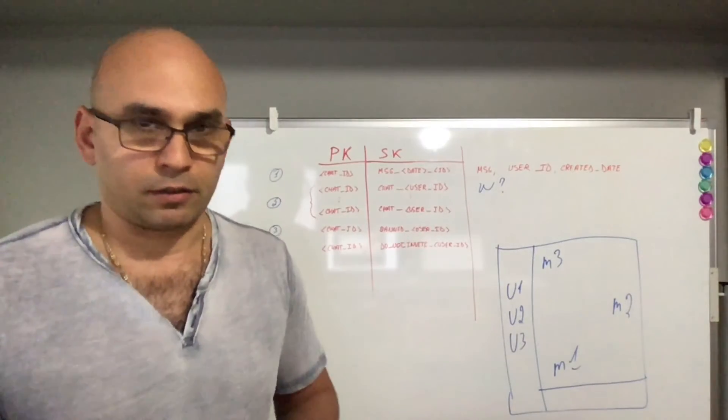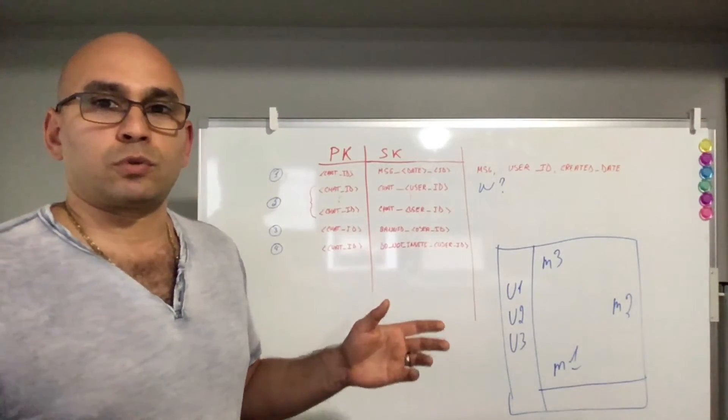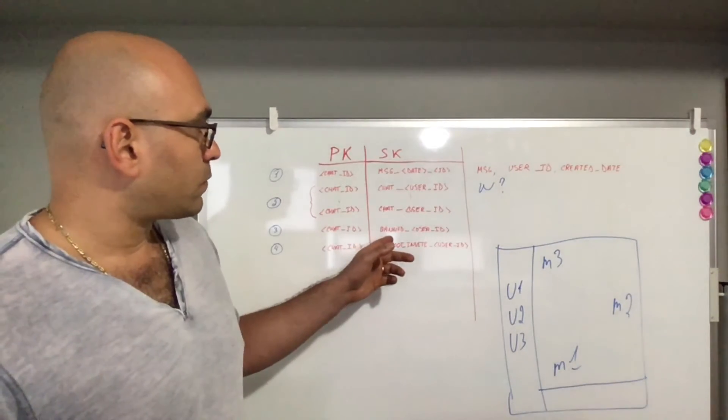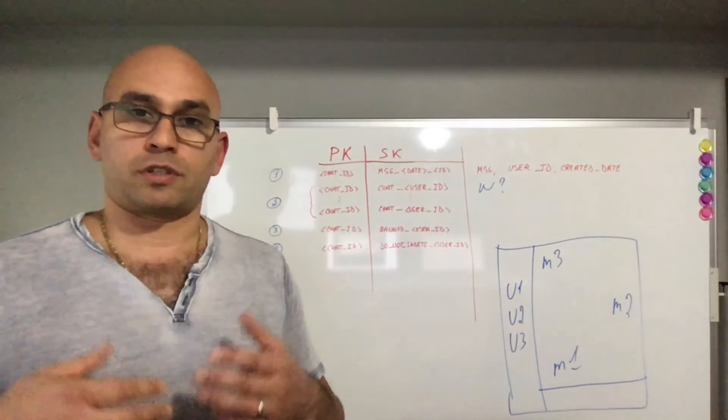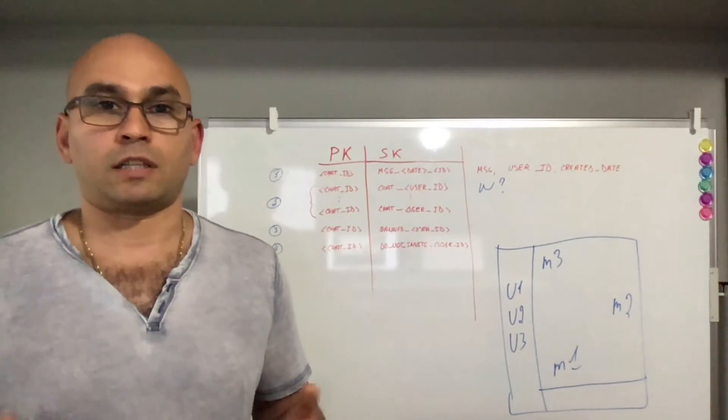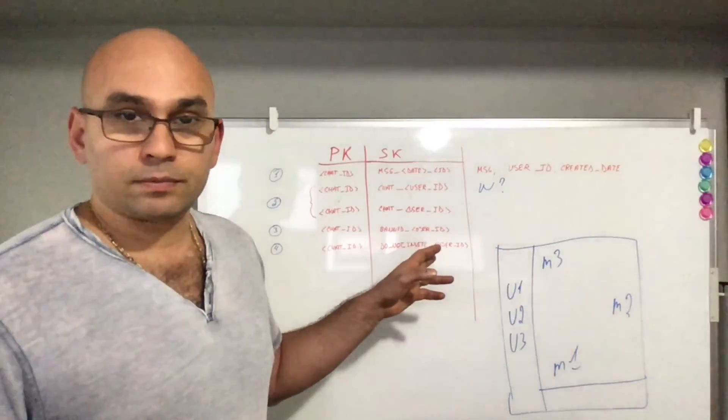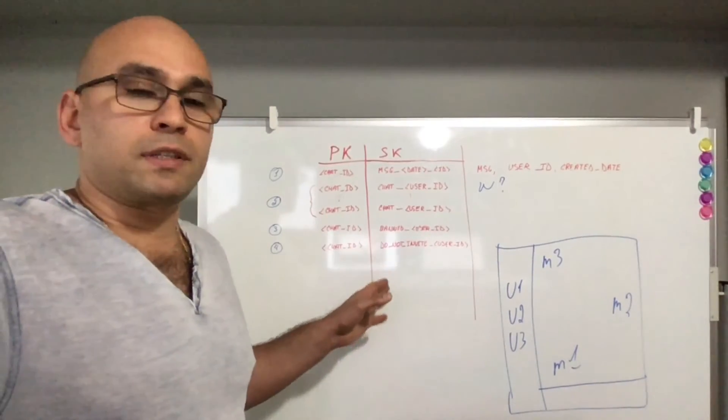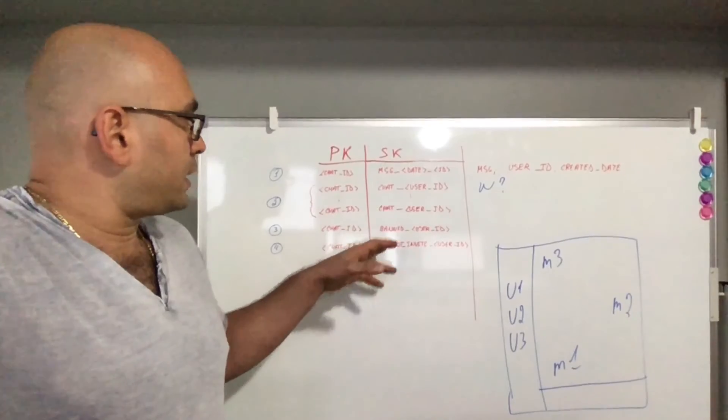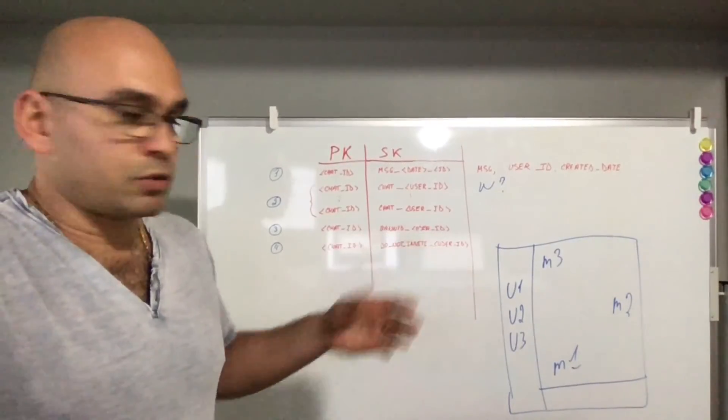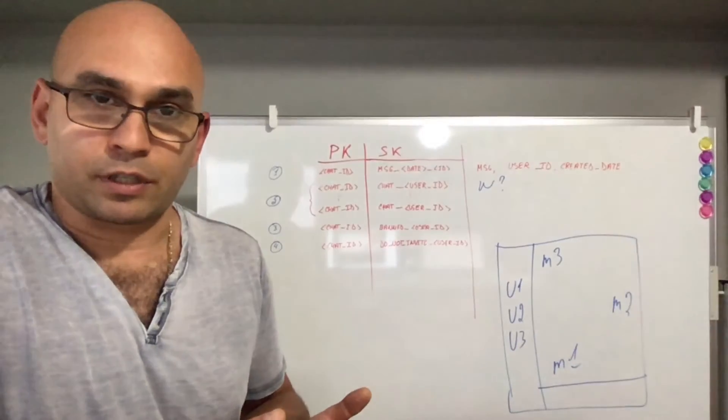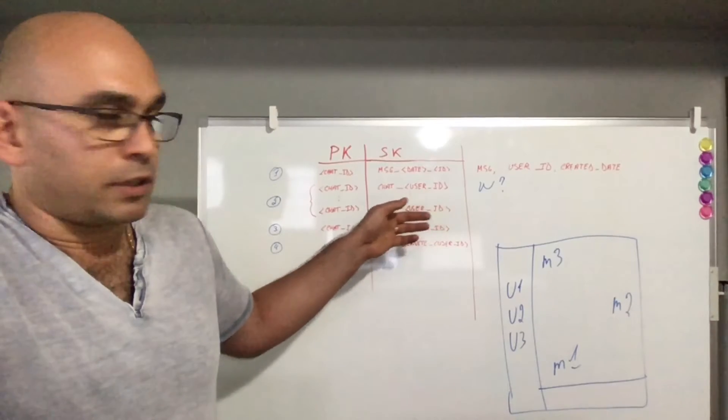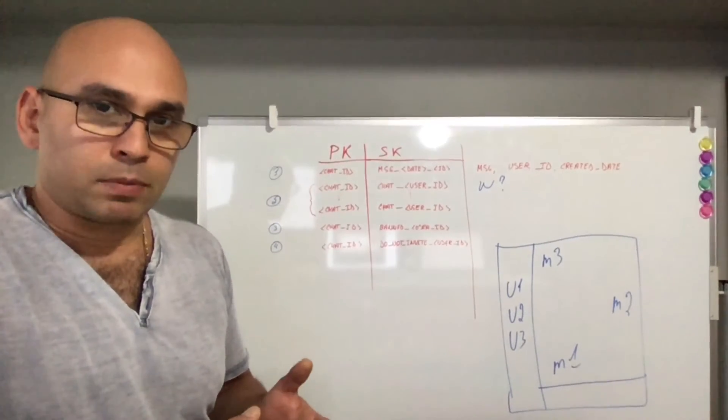I would also be able to, based on this data model, ban users or set myself up, or set myself on a do-not-invite list using this particular composite key. Right, so you have a chat ID, banned, and then the user ID. And then chat ID, do not invite, and then the user ID.